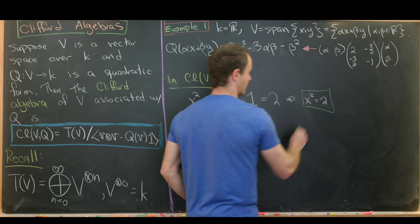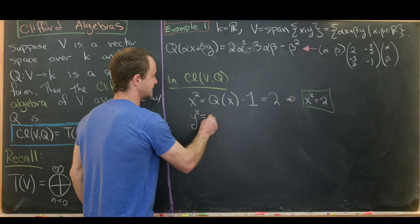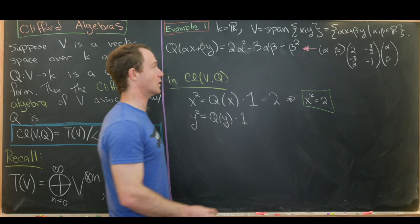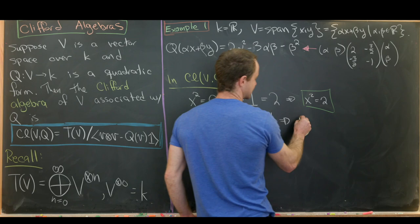What about y²? That should be Q evaluated at y times 1. Q evaluated at y is like having α equal to 0 and β equal to 1. That gives us negative 1. So y squares to negative 1. So y is acting sort of like a complex number here.